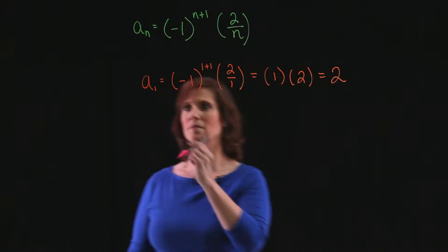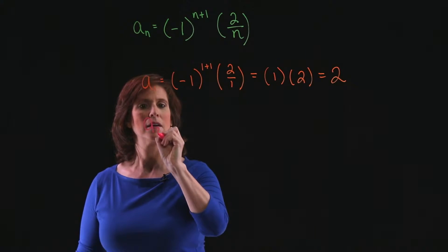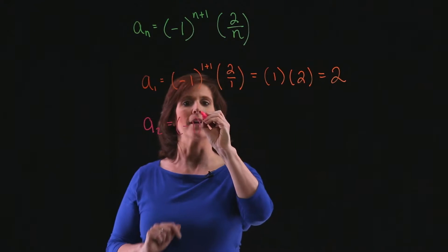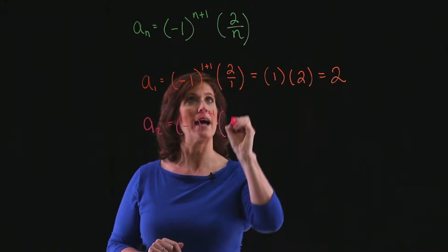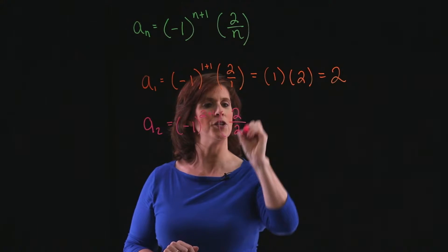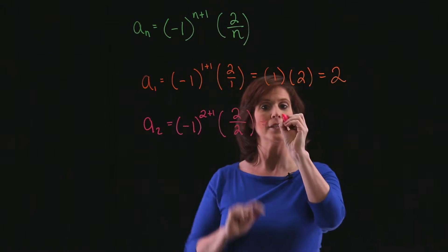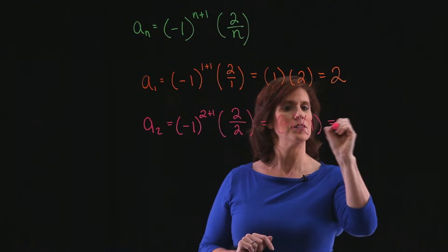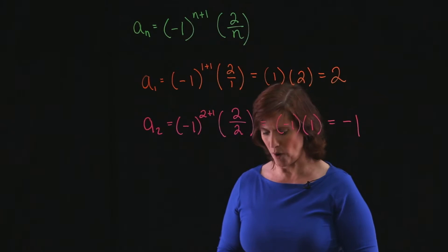For the second term, we'll have minus 1 to the 2 plus 1 times 2 over 2. Negative 1 cubed is negative 1, and 2 over 2 is 1. So my second term is negative 1.